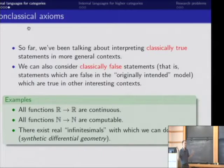So here are some examples of statements like this. All functions from the reals to the reals are continuous. All functions on the natural numbers are computable. Or maybe there exist actual infinitesimal real numbers that we can do calculus in the style that Leibniz did. These are false statements in the ordinary mathematics that we do in set theory, but they might be true. And in fact, all of these statements are true in some particular models.